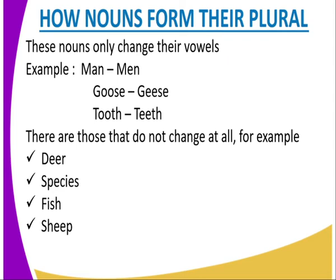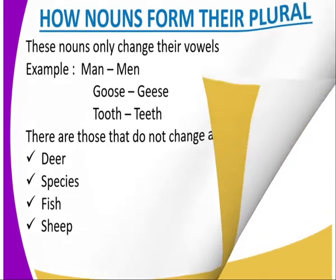We also have nouns that change their vowels to form their plural, for example man to men, goose to geese, tooth to teeth. And there are nouns that do not change at all, such as deer, species, fish, and sheep.